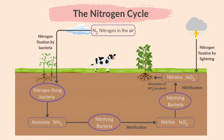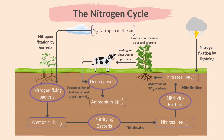Plants absorb nitrate ions from the soil and use them to produce amino acids and proteins. These proteins are then available to animals, which feed on the plants and digest the proteins in them. Animals get nitrogen by consuming plants or other animals and digesting their proteins. Decomposers like bacteria and fungi break down dead organic matter into simpler compounds, including ammonium ions, which are then released into the soil.